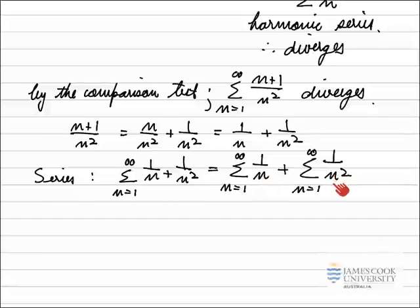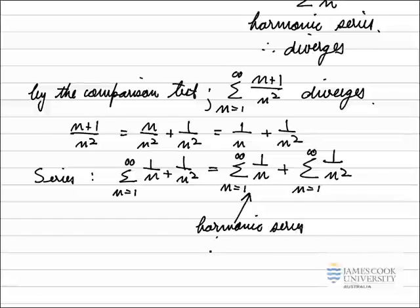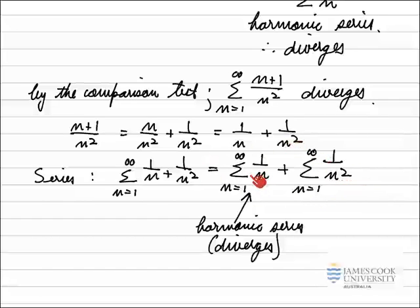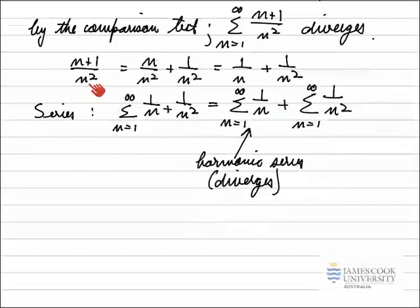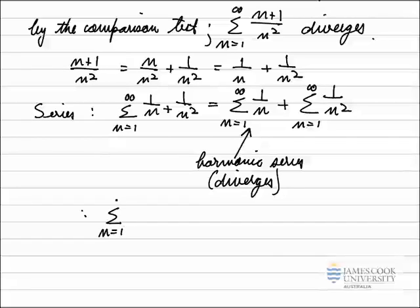Since everything is being summed over all n values, we can break this into two separate series: the sum from n equals 1 to infinity of 1 over n, plus the sum from n equals 1 to infinity of 1 over n squared. The first is the harmonic series, which diverges. The second is a p-series with p equal to 2, so it converges. But when you add a series that diverges to infinity to another positive-term series, the whole series must diverge as well. Therefore our original series, the sum from n equals 1 to infinity of n plus 1 over n squared, diverges.